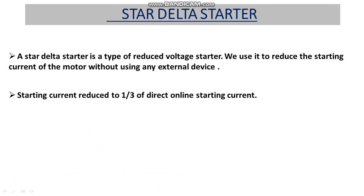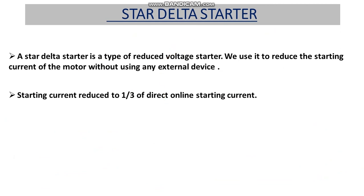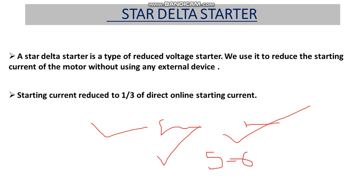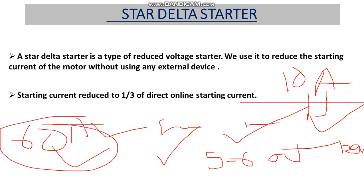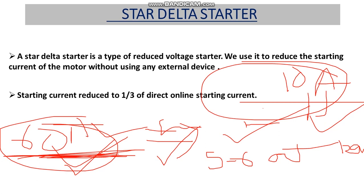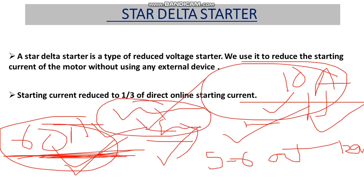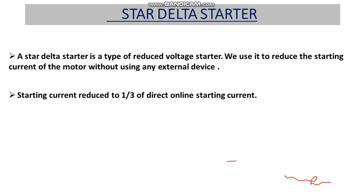The advantage of a star delta starter over a DOL starter is related to inrush current. When we start a three-phase induction motor, it draws five to six times the rated current initially. For example, if the motor is rated at 10 amperes, it will draw around 60 amperes at startup. This inrush current can burn the motor winding.